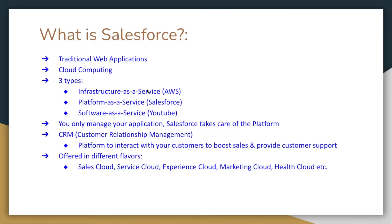Software as a Service means we use a particular software over the internet — we don't maintain it ourselves. A simple example is YouTube.com — we just open the browser, go to YouTube, get video suggestions, and search for specific videos. That's software as a service.